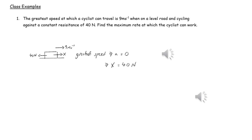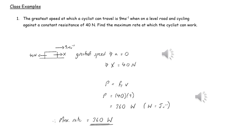We first of all need to work out the driving force or tractive force of the cyclist, and because there is no acceleration, the driving force will just equal the resistance. The rate at which the cyclist can work is the power of the cyclist, so we can just use power equals tractive force times velocity to work out the power of the cyclist.